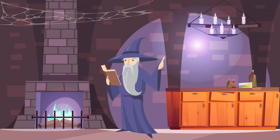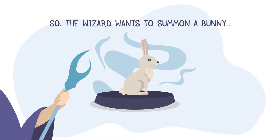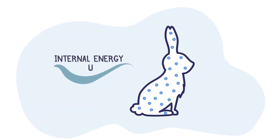As a regular day for a wizard, he spends his time training and improving his spells, and today he wants to summon a cute little bunny — a spell he learned in the most recent edition of the Magician's Gazette. Using his wand, he converts the energy gained from his breakfast into the internal energy of the rabbit. Internal energy is the energy contained within a thermodynamic system — that is, the energy necessary to create a system in any state, in this case, a rabbit.